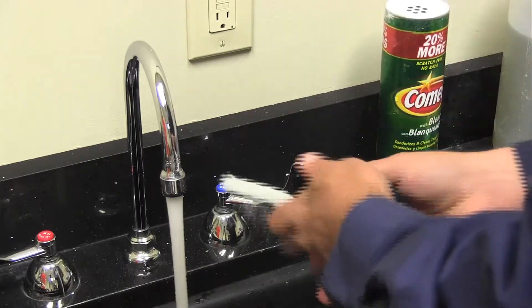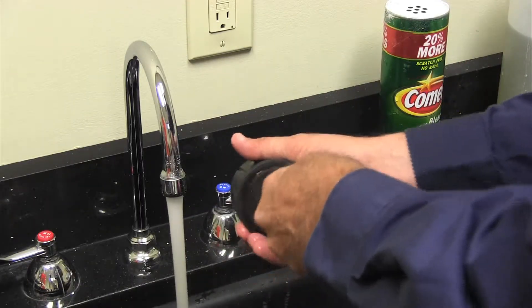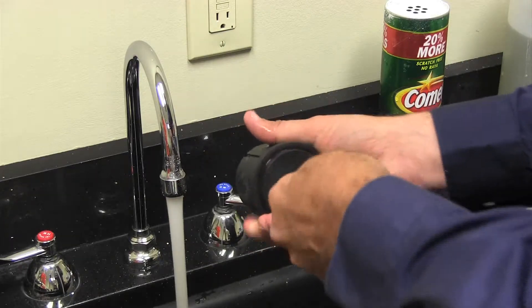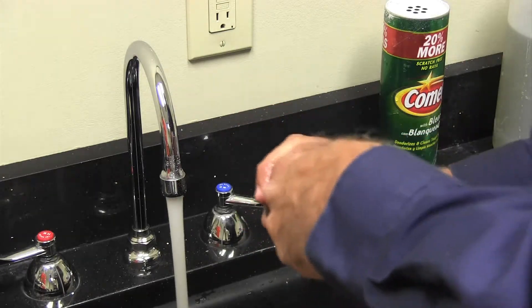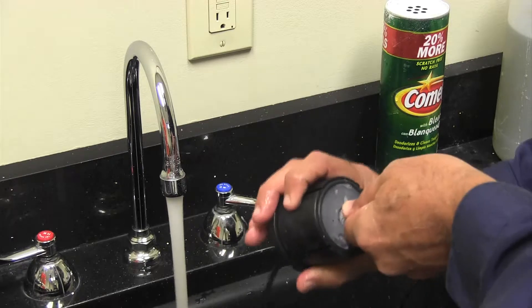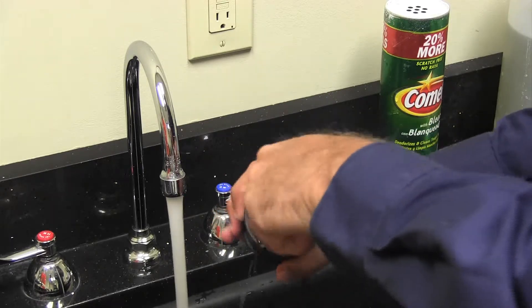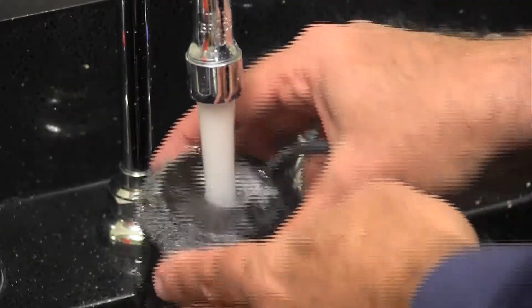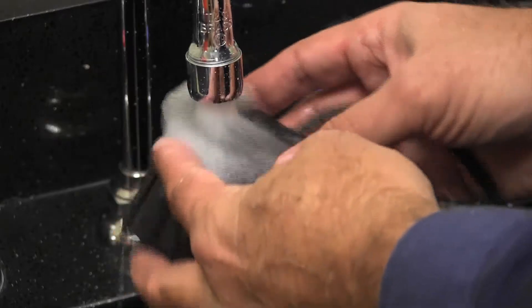Other cleaning solutions can be used, such as a 50-50 combination of white vinegar and 3% hydrogen peroxide, as shown in the DT3 cleaning video. After scrubbing, be sure to rinse the surfaces well.